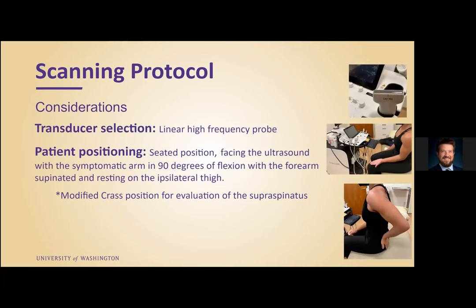In terms of our transducer selection, we used the linear high-frequency probe and had the patient positioned seated, facing towards the ultrasound, with the symptomatic arm in 90 degrees of flexion and forearms supinated and resting on the ipsilateral thigh. When we evaluate the supraspinatus tendon, we have the patient placed in the modified crass position.